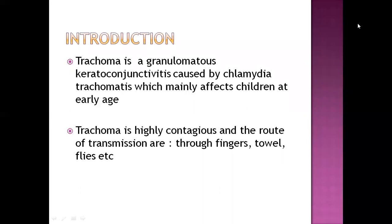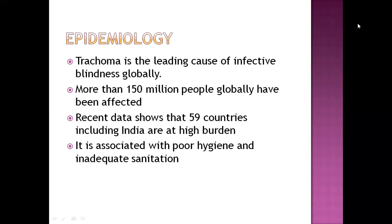caused by Chlamydia trachomatis. This mainly affects children who are less than five years old. Trachoma can be highly contagious, that is transmissible, and there can be many routes of transmission. Some of them are through fingers, that is direct contact, towels, and flies, which can be a vector for transmission.